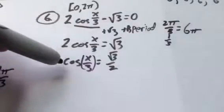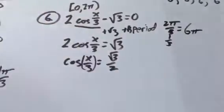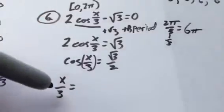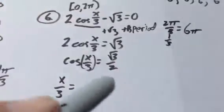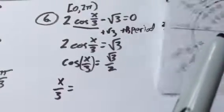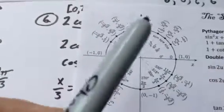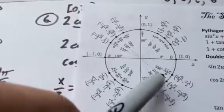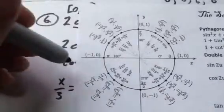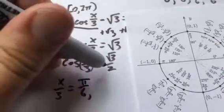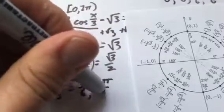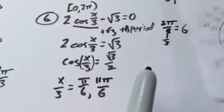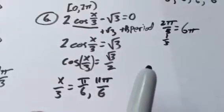And so notice it's cosine of something gives us that value. So that means that this something could end up being, I'm just going to look this up, cosine is root 3 over 2. So it looks like 30 degrees or π over 6, and 11π over 6, 330.